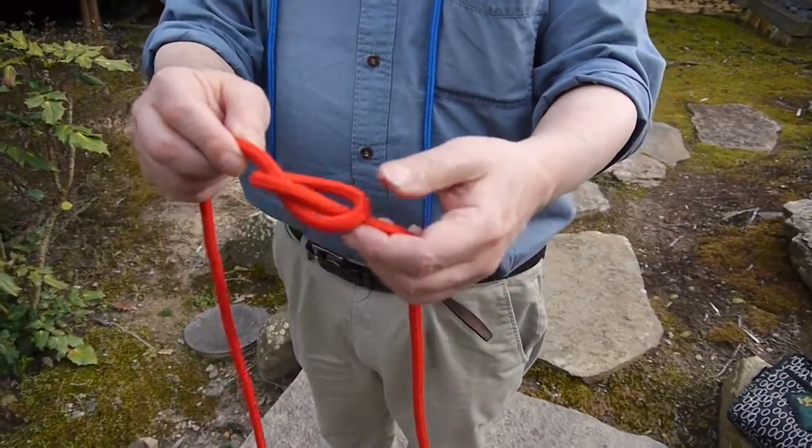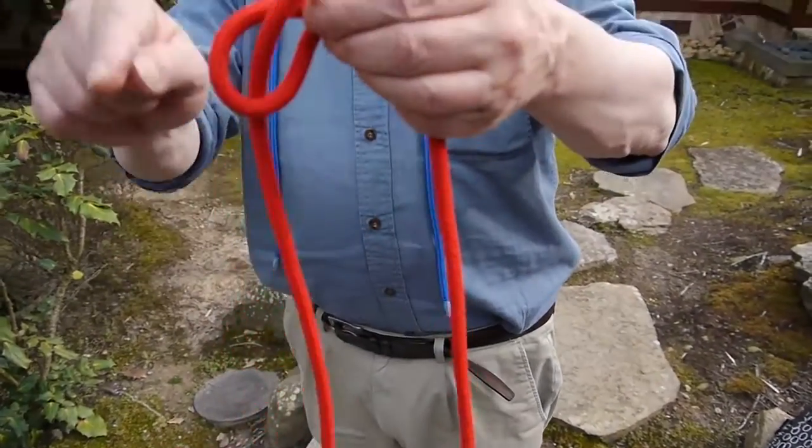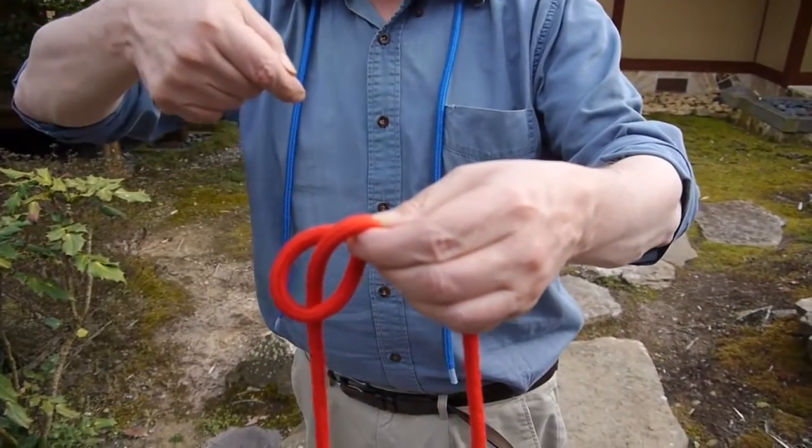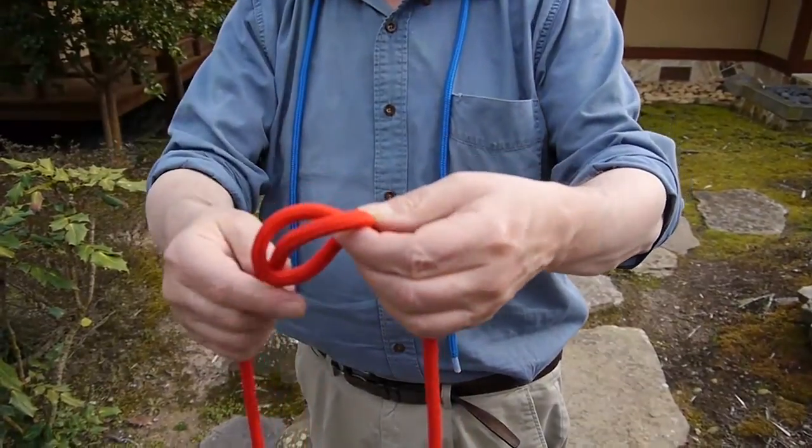So you can think of the trefoil knot, if you like, as a loop with another line that continues back through the loop that locks it up.